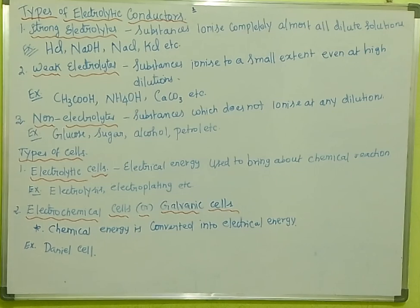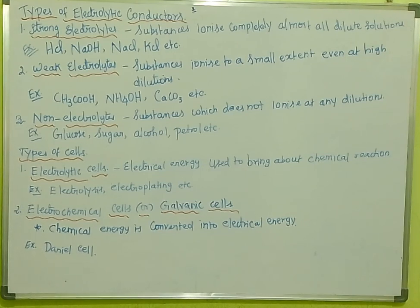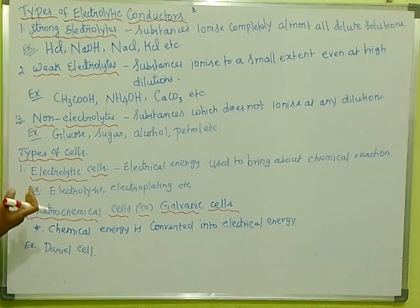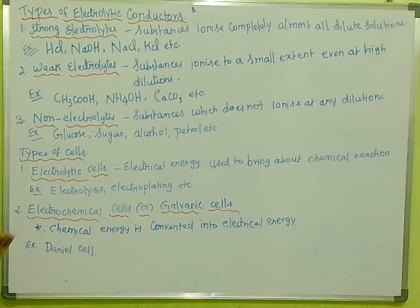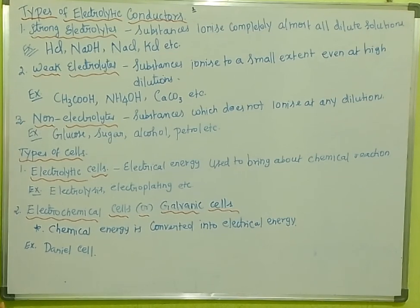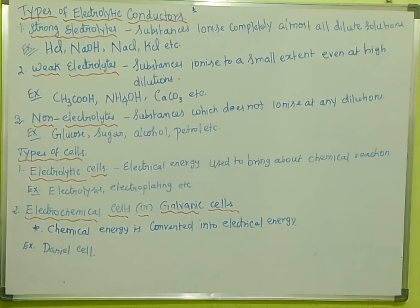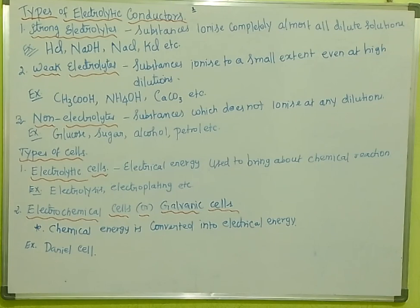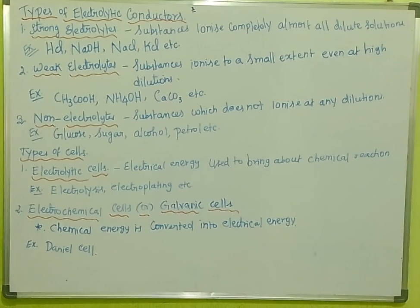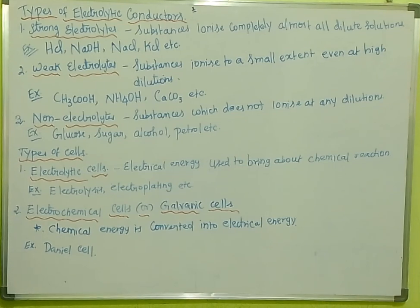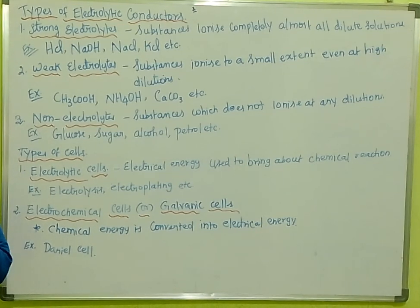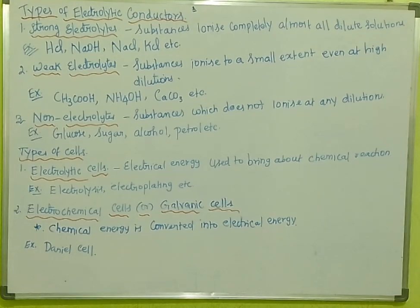To summarize the basic introduction: we looked at the types of electrolytes — strong electrolytes, weak electrolytes, and non-electrolytes — and the types of cells — electrolytic cells and electrochemical galvanic cells. We will look at more detail in the next video. Please like, comment, share, subscribe, and support. Thank you.